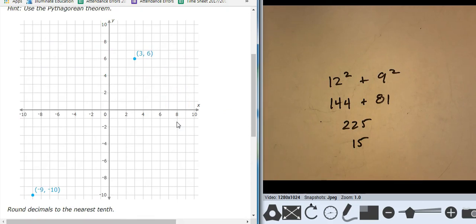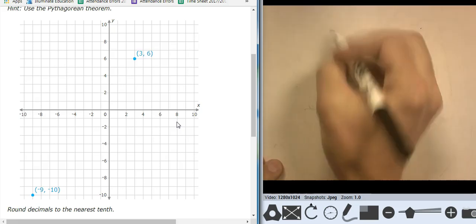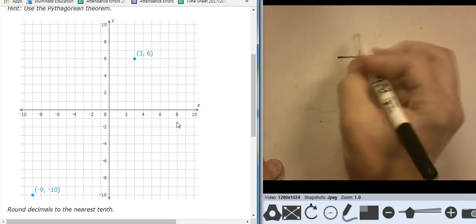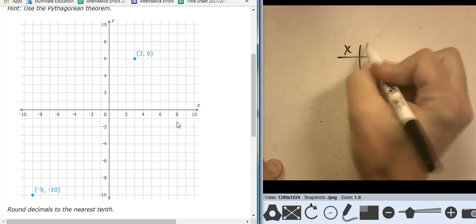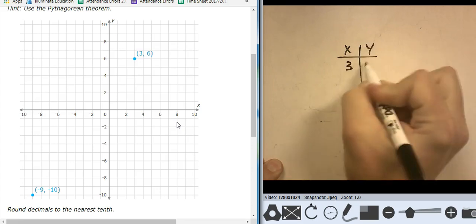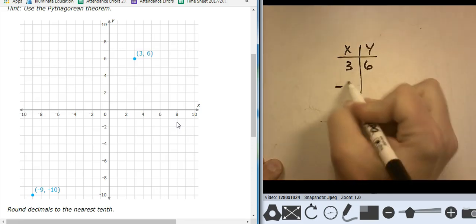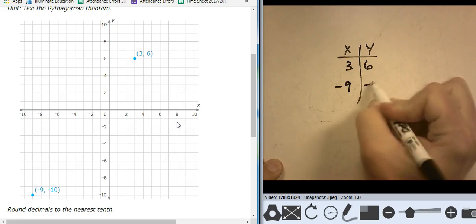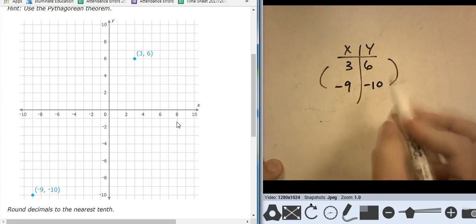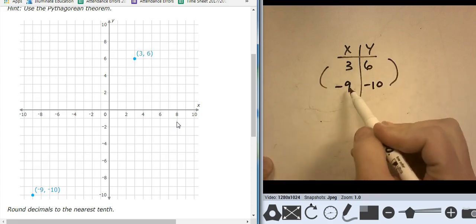All right, so that's absolutely a method that'll work. But here's another one without drawing the triangle. Think about those two points in a table. Think about it as x and y. So I have 3, 6, and I have negative 9, negative 10. Think about how that changed from 3 to negative 9. How did it change?